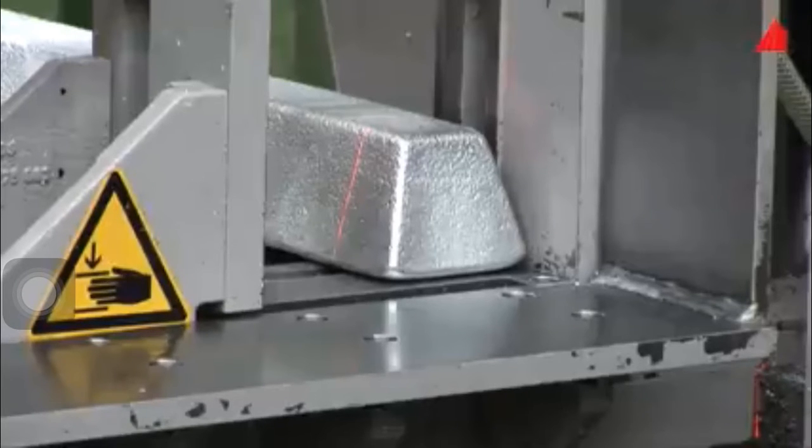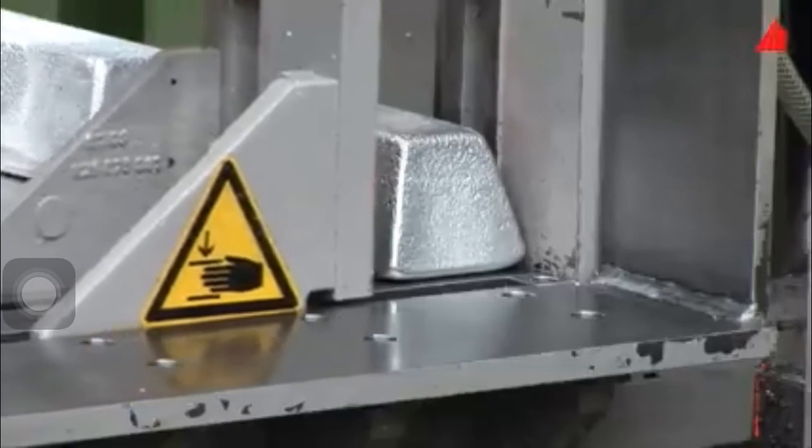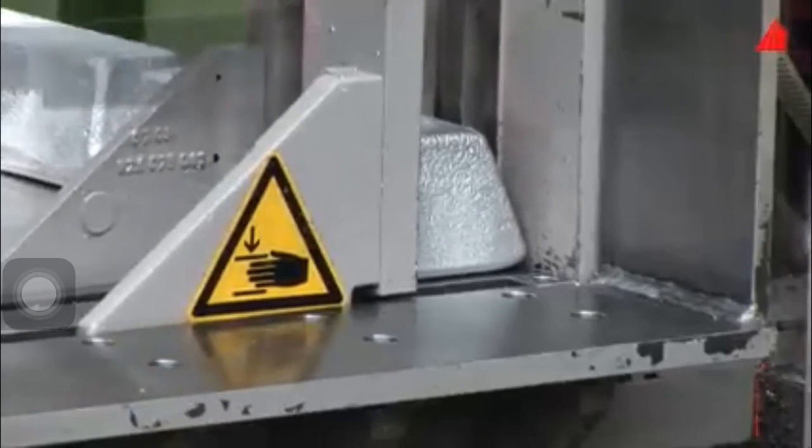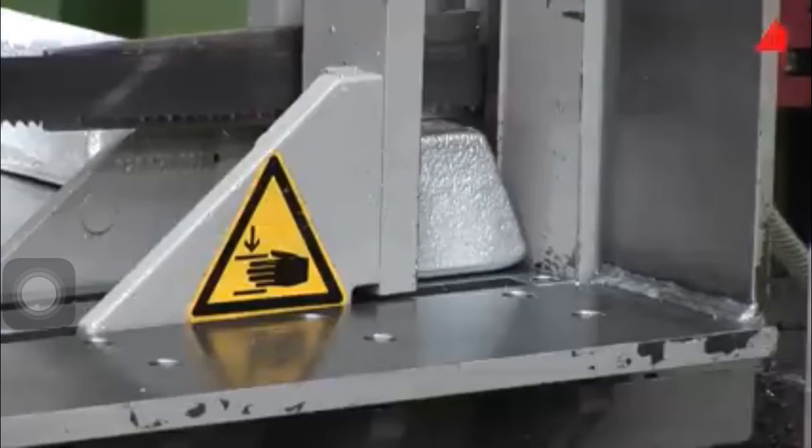The bandsaw machine has already been prepared. The ingot is positioned on the saw table so that the red laser marking line indicates the intended cutting plane. Clamping jaws fix the ingot securely.